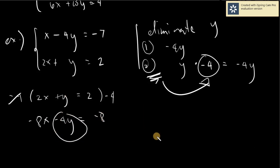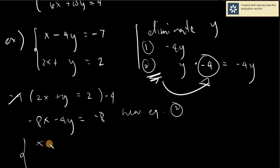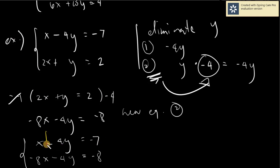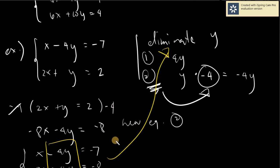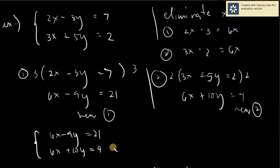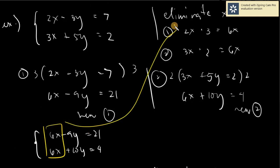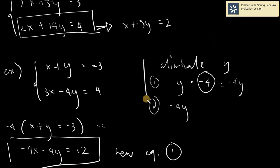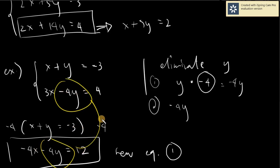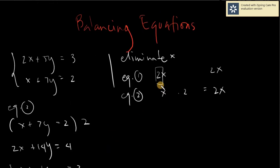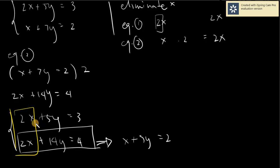Therefore you will have them as the same. Your new equation 2 is negative 8x minus 4y equals negative 8, and you copy equation 1 as x minus 4y equals negative 7. Your aim is to make the one you want to eliminate the same — both have negative 4y now, so they are the same. That is the key concept: you must be able to balance your equation, and the variable you want to eliminate must match.